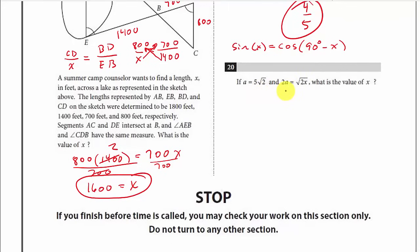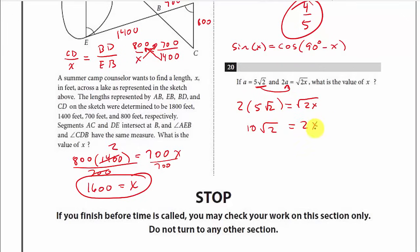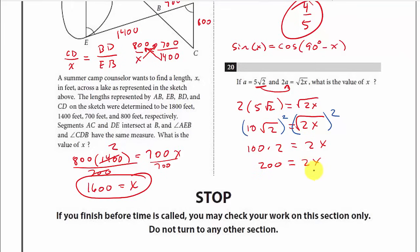If A equals 5 times the square root of 2, and 2A equals the square root of 2X, what is the value of X? Plug in A: 2 times 5 square root of 2 equals square root of 2X, giving 10 square root of 2 equals square root of 2X. Square both sides: 100 times 2 equals 2X, so 200 equals 2X. Dividing by 2, X equals 100.